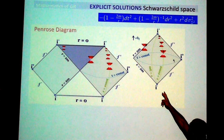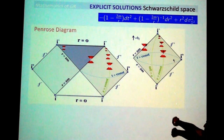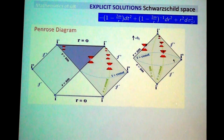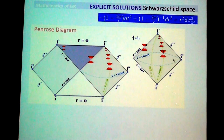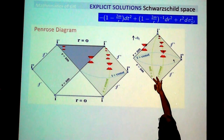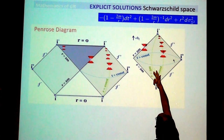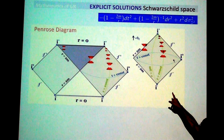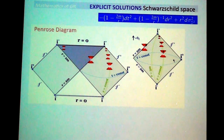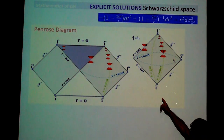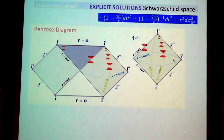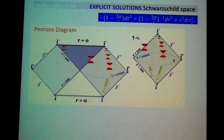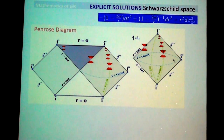At r equals 3m, light can be trapped and stays there forever — the photon sphere. The Schwarzschild solution is stationary. In fact it is static, meaning the vector field d/dt is also hypersurface-orthogonal, perpendicular to t equals constant hypersurfaces. As you approach the event horizon, d/dt becomes tangent to the boundary and becomes null — it is null exactly along the event horizon r equals 2m.